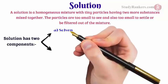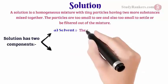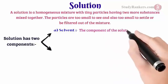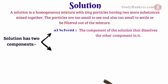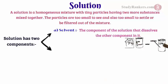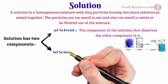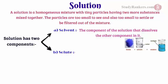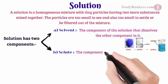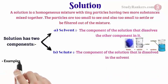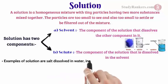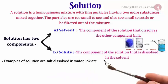What are solute and solvent? The component of the solution that dissolves the other component in it is called the solvent. Usually, the solvent is present in larger amount. The component that dissolves in the solvent is called the solute. Usually, the solute is present in lesser quantity. Examples of solutions are salt dissolving in water, ink, etc.